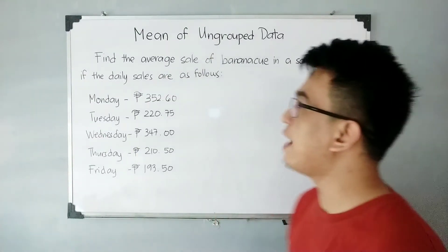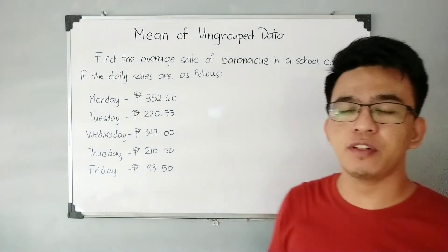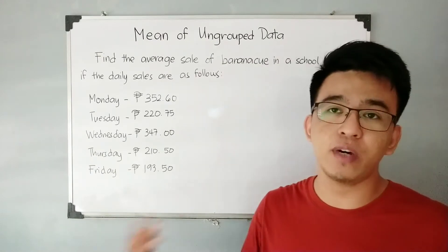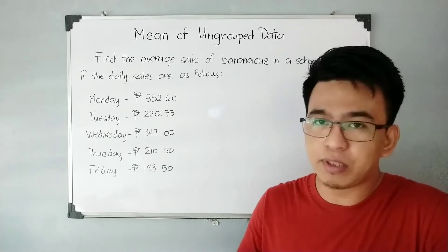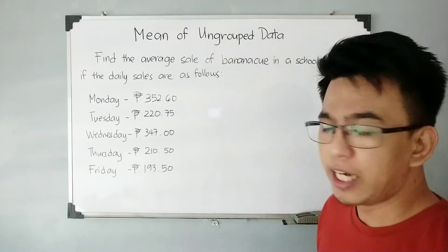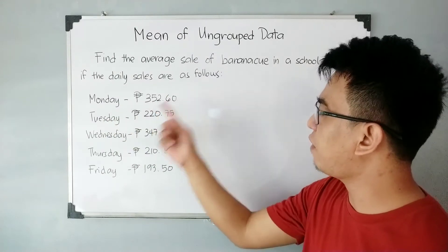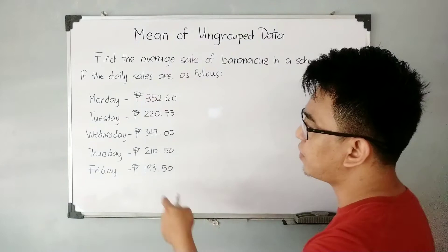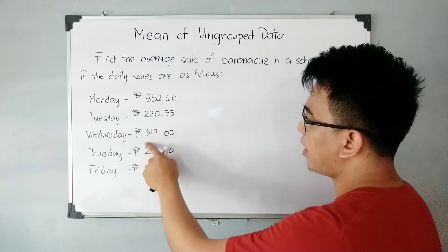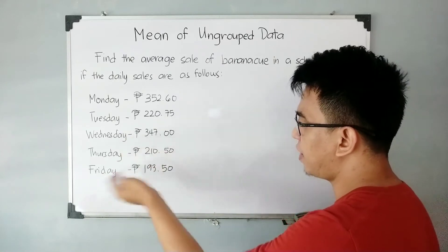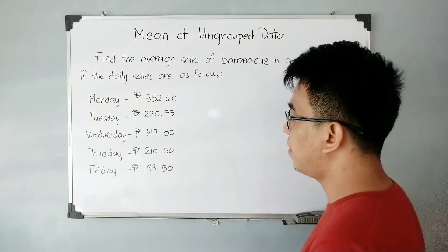For item number 2, we have the problem: Find the average sale of banana queue in the school canteen if the daily sales are as follows. By the way, for those who do not know banana queue, it is a favorite Filipino merienda where you fry a banana with sugar. So, the sales each day: Monday — 352 pesos and 60 centavos; Tuesday — 220 pesos and 75 centavos; Wednesday — 347 pesos; Thursday — 210 pesos and 50 centavos; and Friday — 193 pesos and 50 centavos.